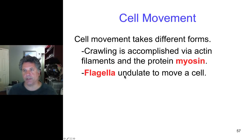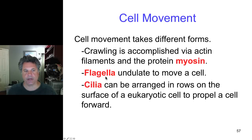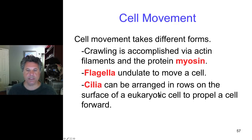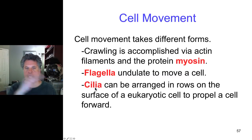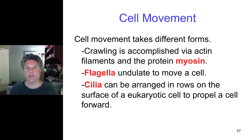Flagella of course can contribute to cell movement as they do in prokaryotes. In eukaryotes, flagella undulate to move a cell and the flagella of eukaryotes has a very particular structure. In addition to flagella, cilia are also projections from the cell surface and they can be arranged in rows to propel a cell forward. Many eukaryotic cells have cilia on them that beat and that beating can drive the cell forward. Many marine larvae, for example, have cilia coating their larval cells and it's that beating that moves the larvae through the marine environment.